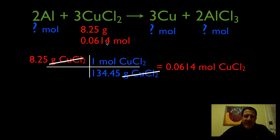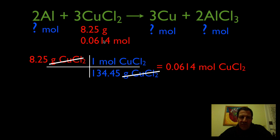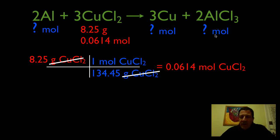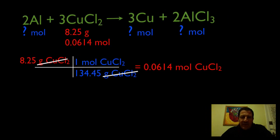Now we're going to use this number of moles to do a molar ratio and convert from moles of CuCl₂ — first to moles of aluminum, then to copper, and then to AlCl₃ aluminum chloride. We're going to use that value, 0.0614, three times.